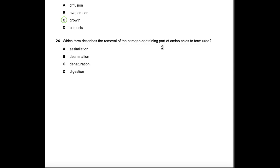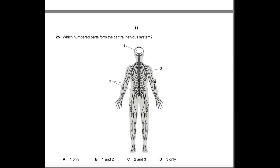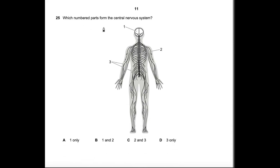Question 24: Which term describes the removal of the nitrogen-containing part of amino acids to form urea? That is the definition of deamination — the process that converts protein into carbohydrates and ammonia, and the ammonia is then converted into urea. Answer: deamination.